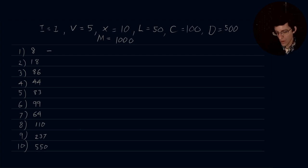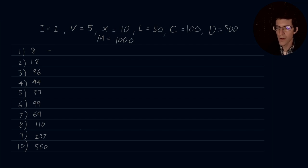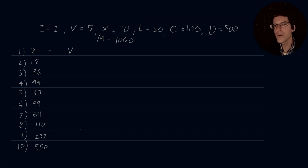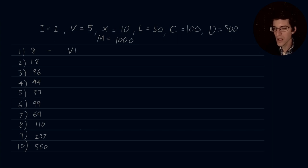Let's start translating these into Roman numerals. For 8: we first need to extract our greatest value. We can't use X because X is 10, so we have to go to 5. We first write our V. We still need 3 more to make up 8, but we don't have a Roman numeral for 3, so we jump down to I and repeat it 3 times. So 8 is VIII.